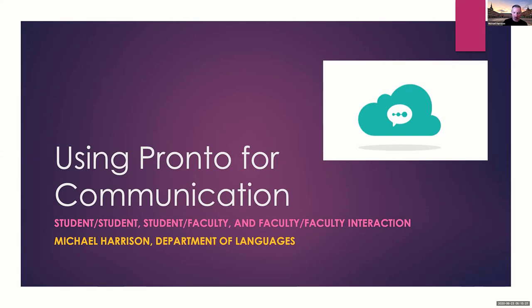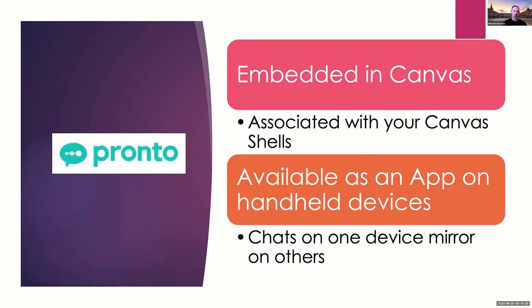So hopefully after this presentation you'll get a better sense. Pronto is embedded in Canvas — that's part of what makes it so great. It's a communication program that allows real-time communication. Canvas does great with emails and announcements, but quick conversational-type communication Canvas does not do well at all. It's associated with our Canvas shells, so it's pre-populated with your classes, students, and faculty colleagues.